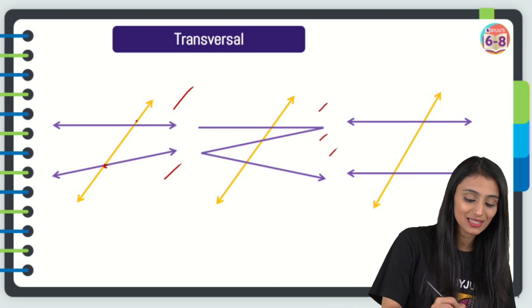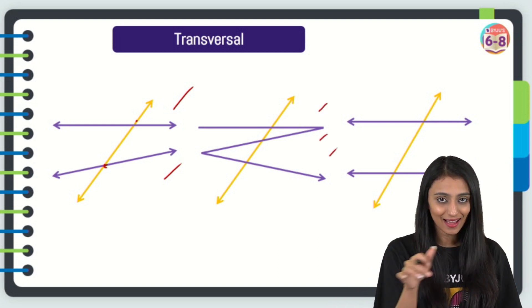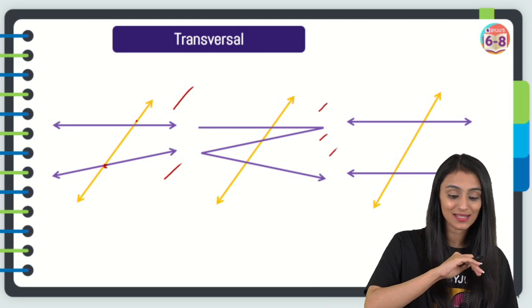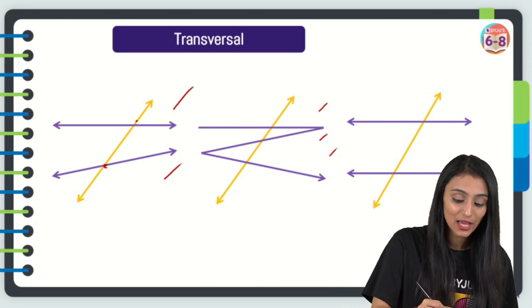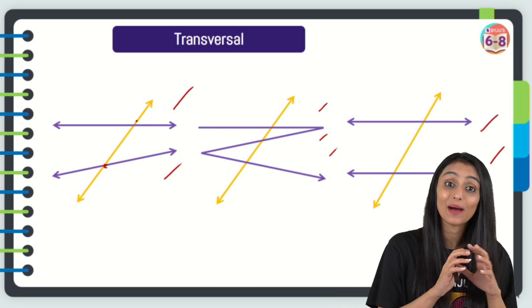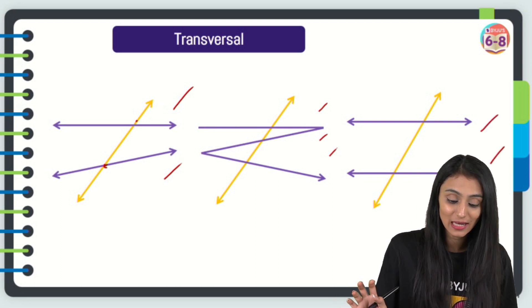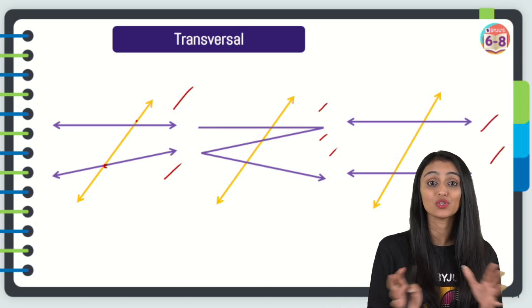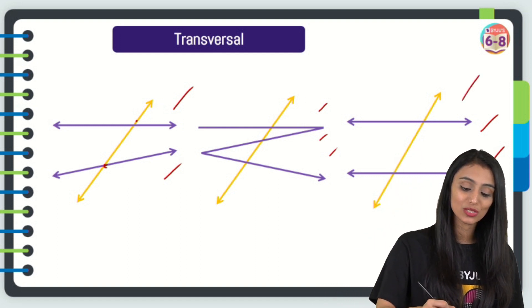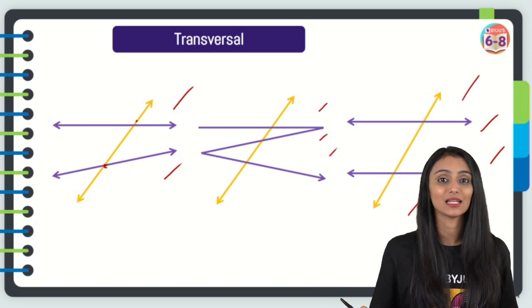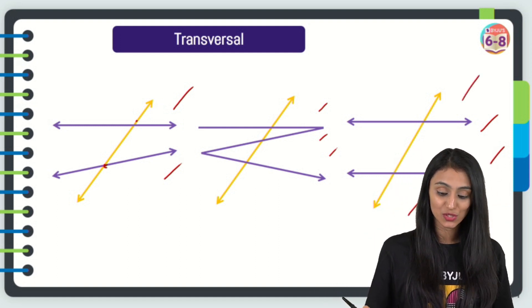Here you can see three zigzag lines intersected by this transversal. And here we have two parallel lines — parallel lines are the ones which never meet each other — and they are also intersected by a transversal.